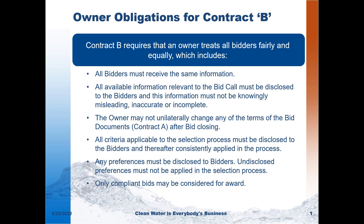So what are the owner's obligations for Contract A? They're listed on the slide here, and it basically requires that an owner treats all bidders fairly and equally, which includes all of the criteria noted. But an invitation to treat is not beholden to all of these rules, so it may give the impression of being unfair. There are advantages to both the owner and the contractor in this more murky model, which is why it's so important to understand what rules are applying to the bids that you're submitting.